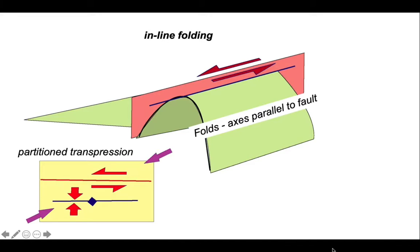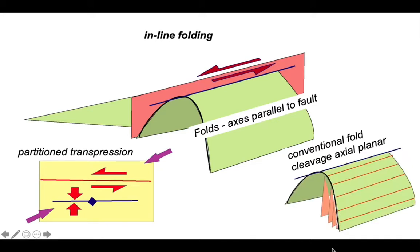We're looking across the anticline to the Yammouneh fault, and beyond would be the rest of the Arabian continent. So we're dealing with partitioned transpression. Consequently, on the ground, we're dealing with a conventional relationship between cleavage and the fold. The cleavage is axial planar. The bedding-cleavage intersections, therefore, are parallel to the fold hinge line.